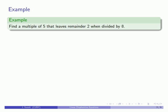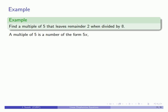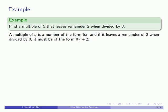For example, let's see if we can find a multiple of 5 that leaves remainder 2 when divided by 8. We have a multiple of some specific number 5, a specific remainder 2, and a specific divisor 8. In modern form, a multiple of 5 is a number of the form 5x, and if it leaves a remainder of 2 when divided by 8, then 5x must equal 8y plus 2.